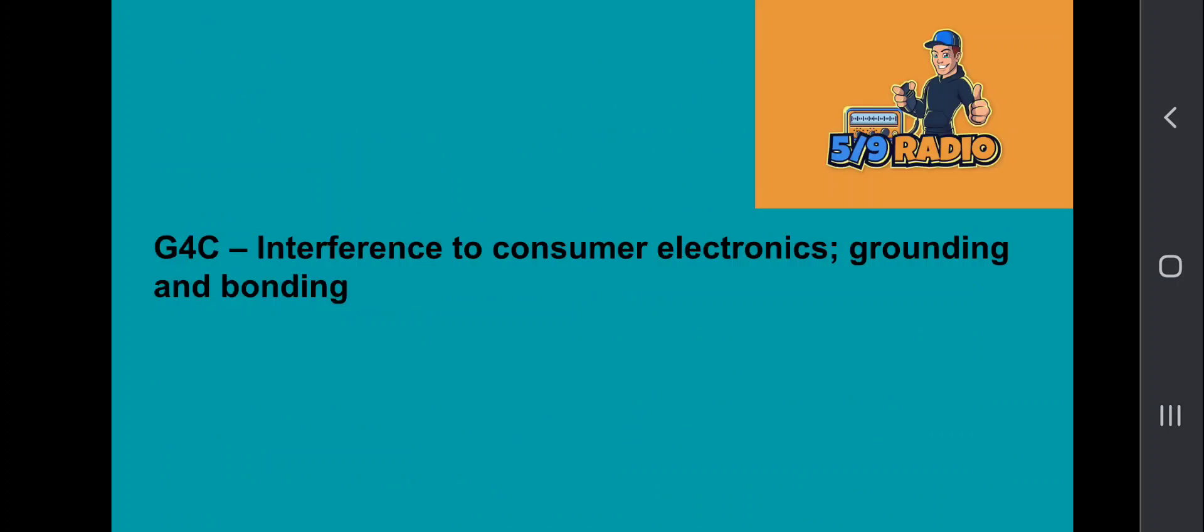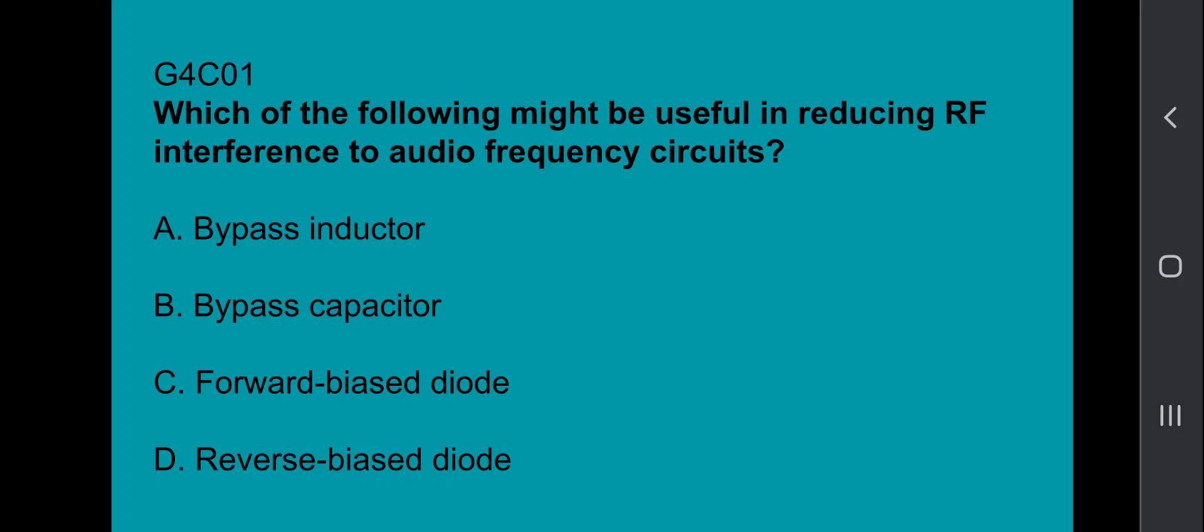G4C covers interference to consumer electronics, grounding, and bonding. G4C01, which of the following might be useful in reducing RF interference to audio frequency circuits? Answer is a bypass capacitor.